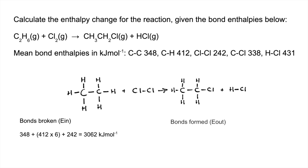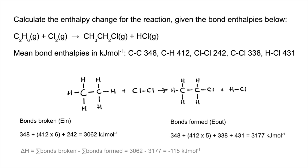We do the same for the bonds formed, giving an energy out of 3177 kilojoules per mole. Using the formula delta H equals the sum of bonds broken minus the sum of bonds formed: 3062 minus 3177. So our enthalpy change is minus 115 kilojoules per mole.